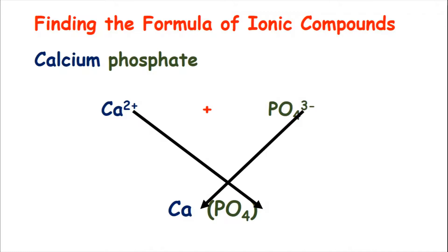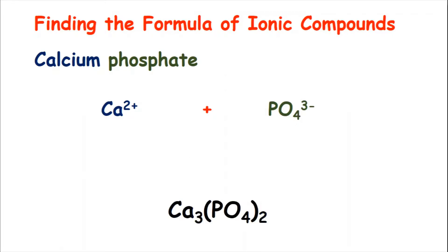It is quite important here that you ignore the subscript number. So in PO4 3-, the subscript 4 we are completely ignoring — we don't need it. We only need the superscript 3. When we move those numbers down, that gives us Ca3(PO4)2, and that is the formula for calcium phosphate.